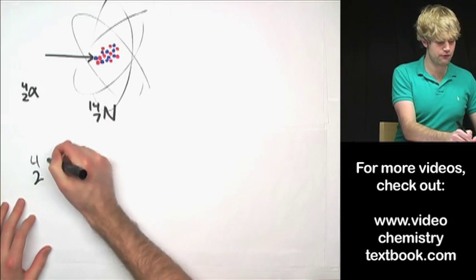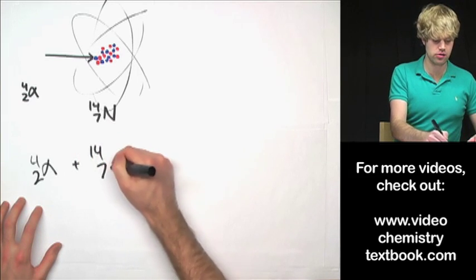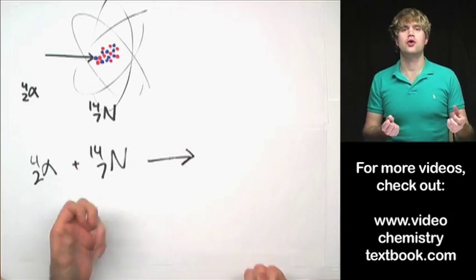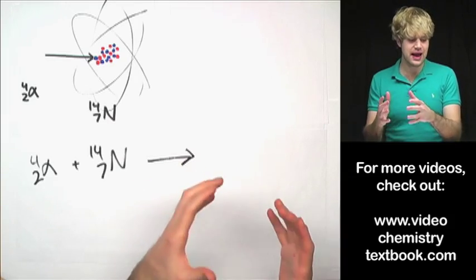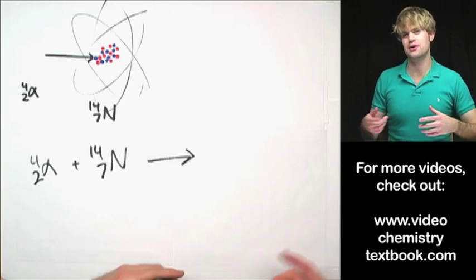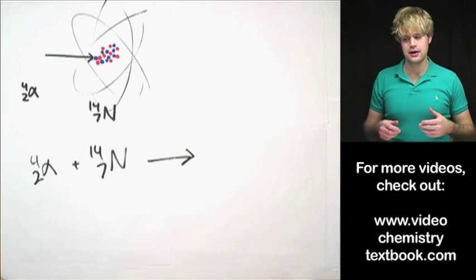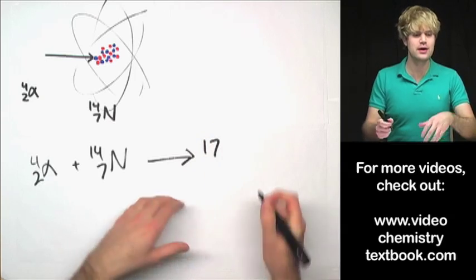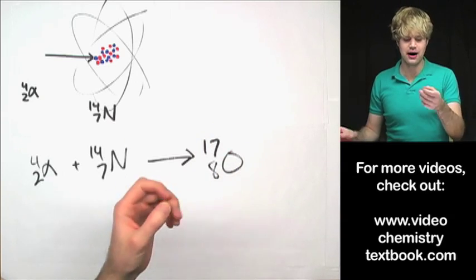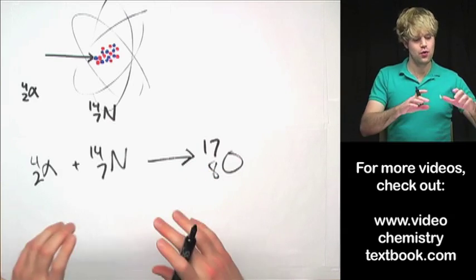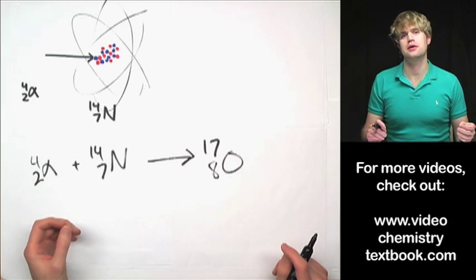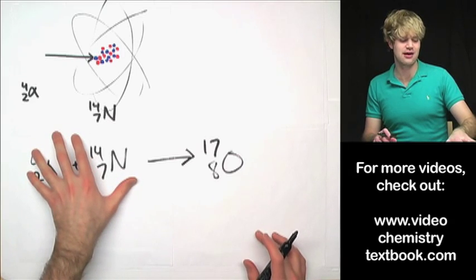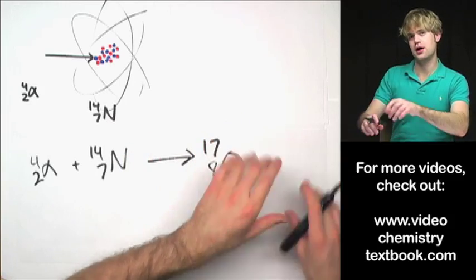I'd write it as 4,2 alpha plus 14,7 nitrogen. Now let's look at what we get out of this. When you do a nuclear transformation reaction, you usually end up with a new element, and then you get a little bit of change — meaning a couple of extra protons or neutrons get kicked out. When I'm doing a nuclear transformation reaction like this, I don't make any new neutrons and I don't make any new protons, which means the number of neutrons and protons on one side of the equation is going to balance the other side.